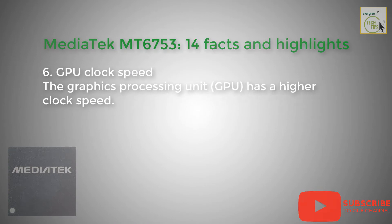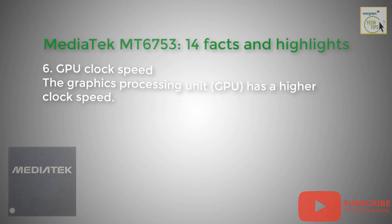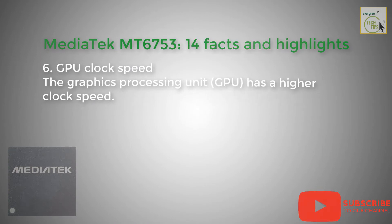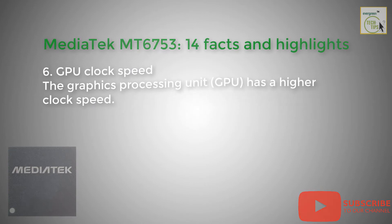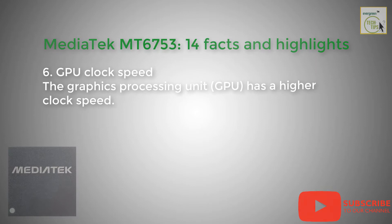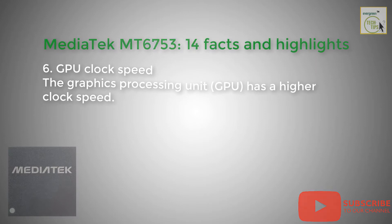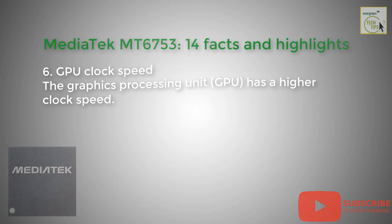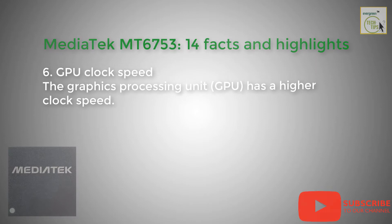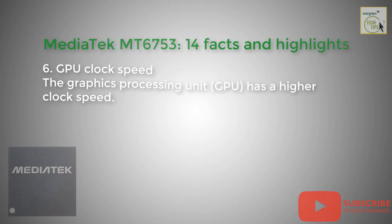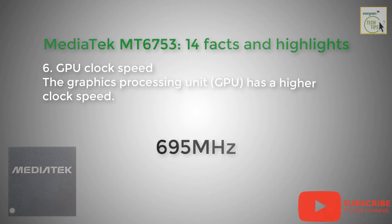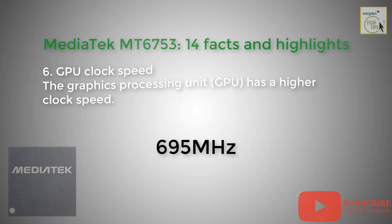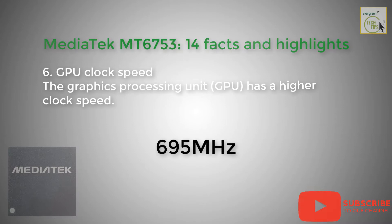6. GPU Clock Speed: The graphics processing unit has a higher clock speed. It is integrated with 695 MHz.